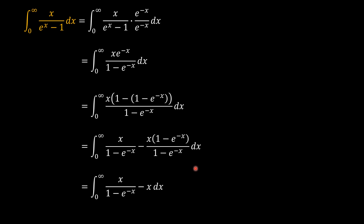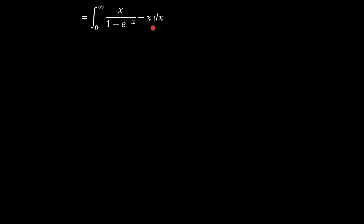Now let's continue and see how we can solve this problem. We rearrange the integrand slightly for clarity, writing it as negative x plus x over (1 minus e to the power negative x).